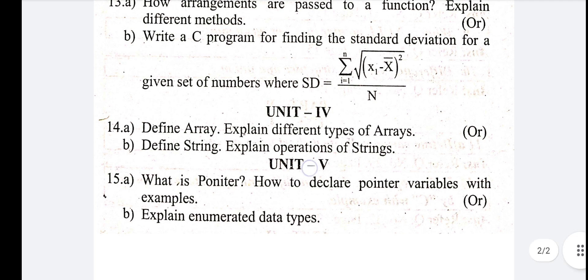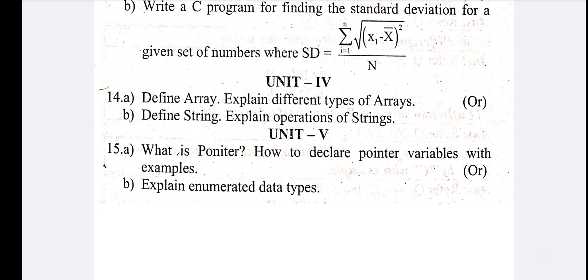Fifth unit — final unit. First question: what is a pointer? How to declare a pointer variable with example. I will explain the pointer, and then the pointer declaration in C language. It will be 10 marks. If you know pointers, I will choose another question: explain enumerated data types.